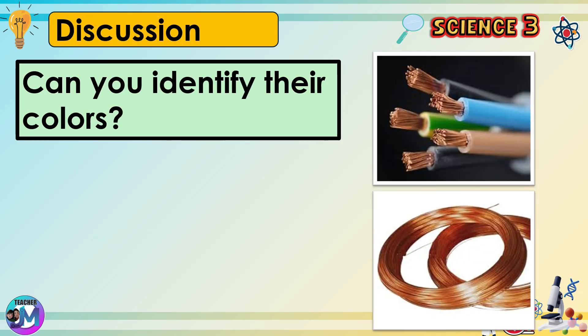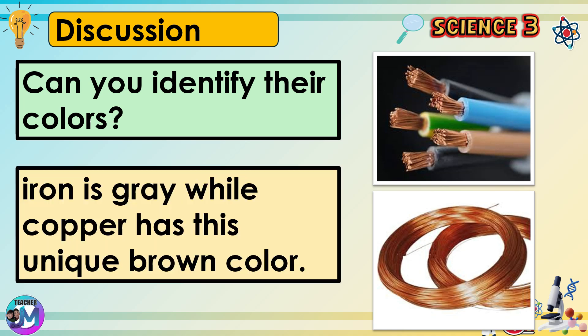Can you identify their colors? Iron is gray, while copper has this unique brown color.